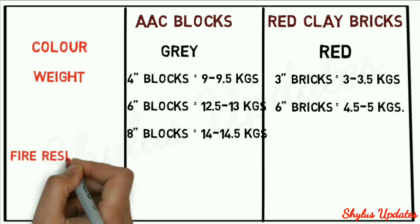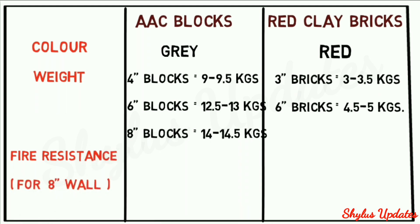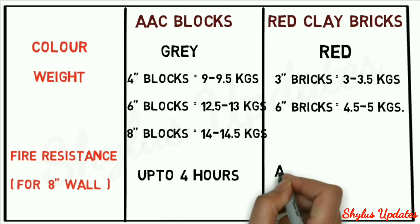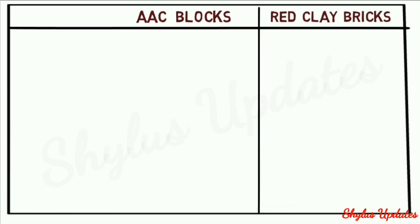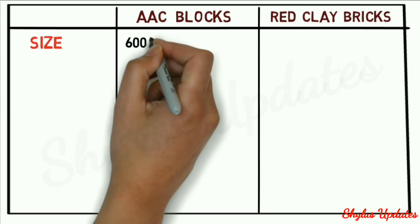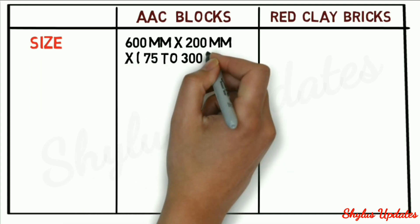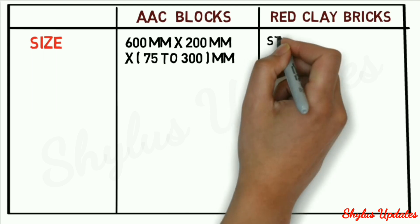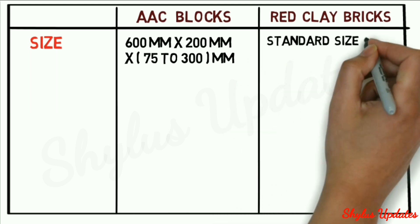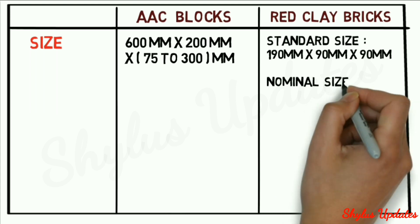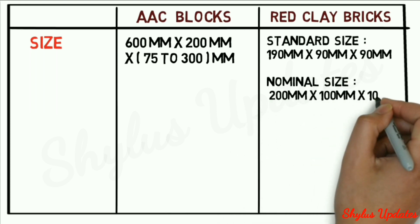Fire resistance: for an 8-inch wall, AAC blocks can withstand up to 4 hours; red clay bricks around 2 hours. Size of AAC blocks: 600 mm x 200 mm x 75 to 300 mm. Size of red clay bricks — standard size: 190 mm x 90 mm x 90 mm; nominal size: 200 mm x 100 mm x 100 mm.